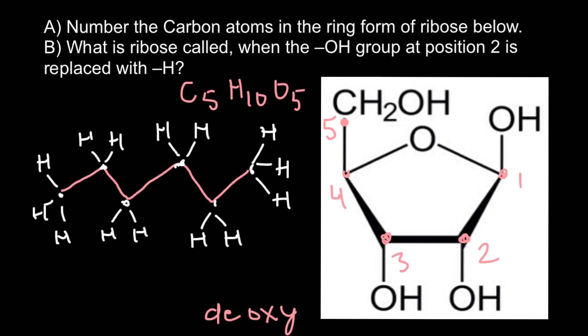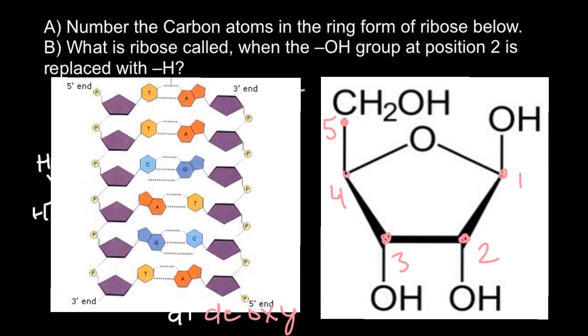We can miss oxygen, so in this case we would call this dideoxy ribose. The first method to sequence DNA was the dideoxy method, when two oxygens were missing.